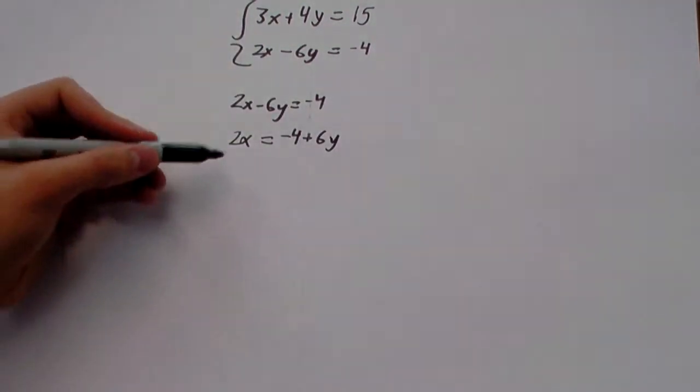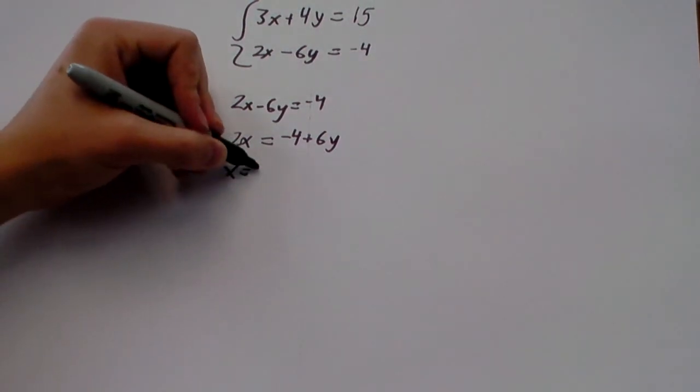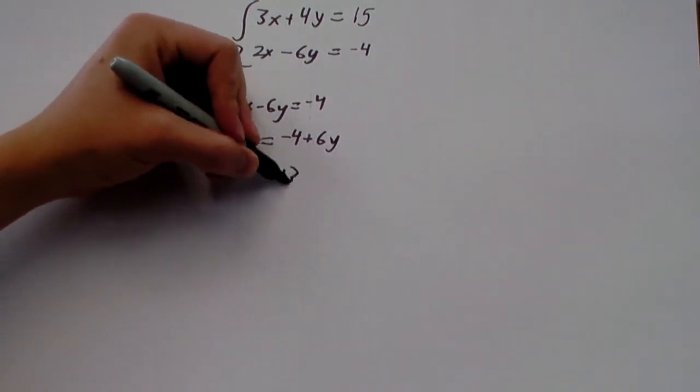And then we'll just divide everything by 2. x equals negative 2 plus 3y.